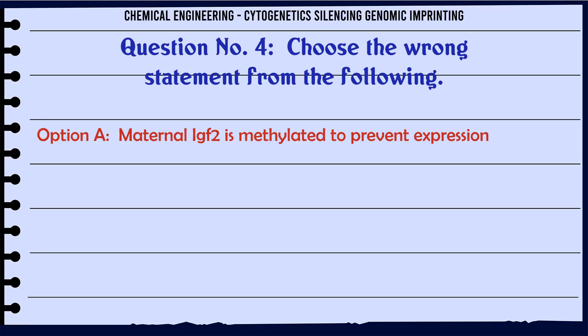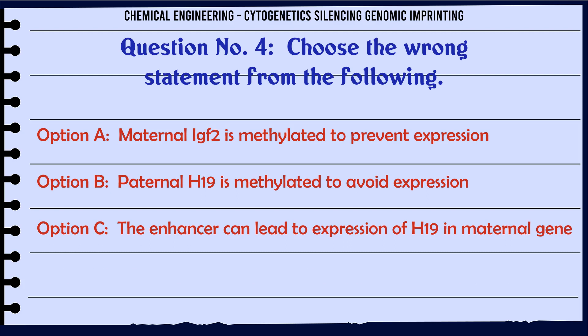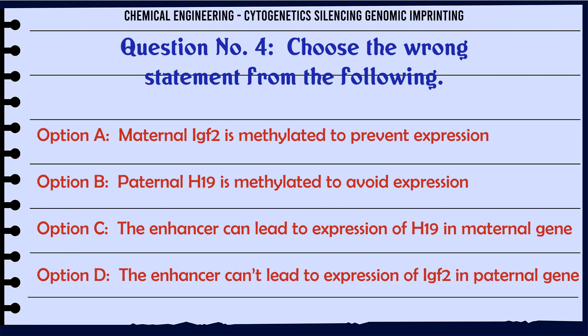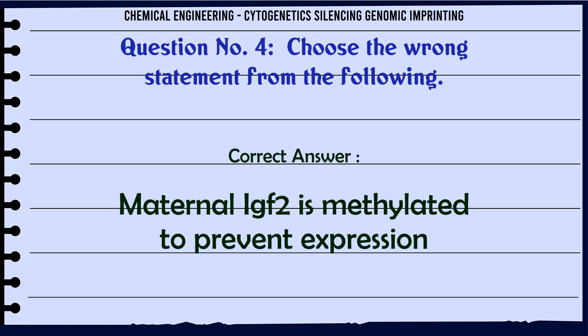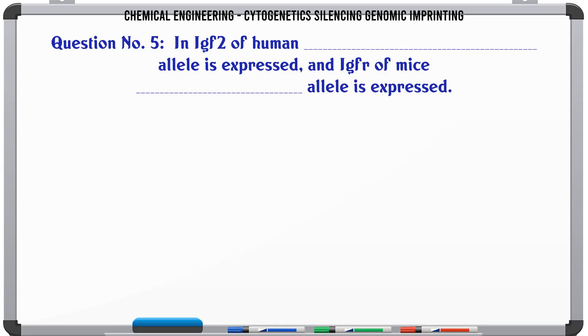Choose the wrong statement from the following. A. Maternal IGF-2 is methylated to prevent expression. B. Paternal H19 is methylated to avoid expression. C. The enhancer can lead to expression of H19 in the maternal gene. D. The enhancer cannot lead to expression of IGF-2 in the paternal gene. The correct answer is A: Maternal IGF-2 is methylated to prevent expression.